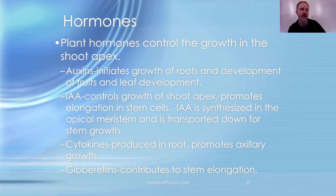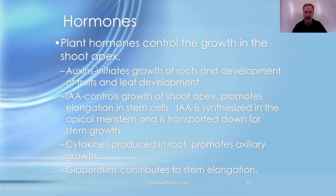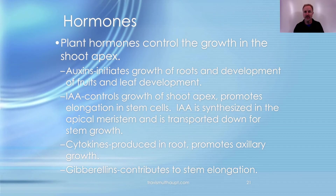There are some hormones the IBO wants you to know. Auxins initiate growth of roots and development of fruits and leaves. IAA (indoleacetic acid) controls growth at the shoot apex, promotes elongation of stem cells, and is synthesized in the apical meristem and transported through phloem throughout the plant. Cytokinins are produced in the roots and promote branching and axillary growth. Gibberellins also contribute to cell elongation.